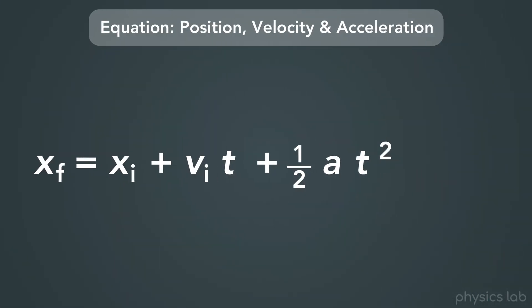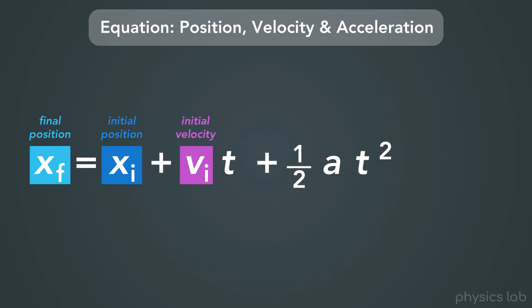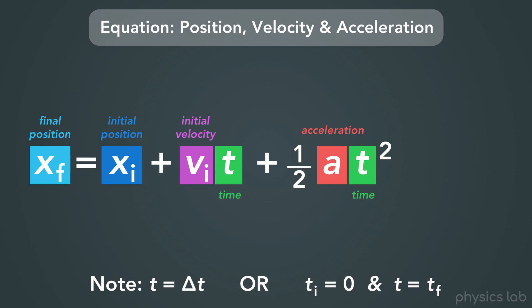In this equation, xf stands for final position, xi is the initial position, vi is the initial velocity, t is the time, and a is acceleration. For equations that only have a t by itself, the t really means delta t, or change in time. We can also think of it this way: we assume the initial time is just zero, and t is equal to the final time, which is the time point we're plugging in to find the object's position.